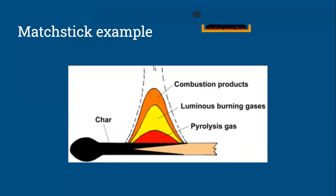And then, the residue that's left over at the end, that's the char. So, we're pyrolyzing the stick. Pyrolysis gases burn in a flame and emit light as they burn. And then, combustion products rise up in a hot plume above the match. If you hold your hand above the match, you feel the hot gases rising because of buoyancy. Hot combustion gases have low density compared to the air, so they would rise.